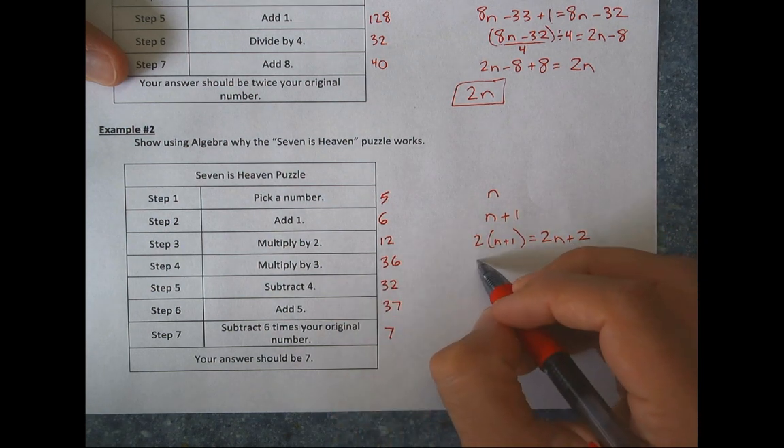So pick any number you want. That's N. Add 1 to it. That's N plus 1. Now multiply that number. So this whole quantity times 2. So it's going to be 2 times N plus 1. Simplify it by distributing. So 2 times N and 2 times 1. Now take that and multiply it by 3. So 3 times 2N plus 2. Distribute. 6N plus 6. Subtract 4 from that. So 6N plus 6 minus 4. Well, these are going to just become a 2. So it's 6N plus 2.